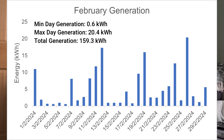This year we generated significantly less, and there are a couple of reasons for that. Last year was the driest February on record according to one news source I read, whereas this was one of the wettest Februaries on record. Looking at the day-to-day generation graph for February 2024, there were only seven days out of 29 where we produced over 10 kilowatt hours, and many days producing less than five, with long stretches generating under two kilowatt hours.